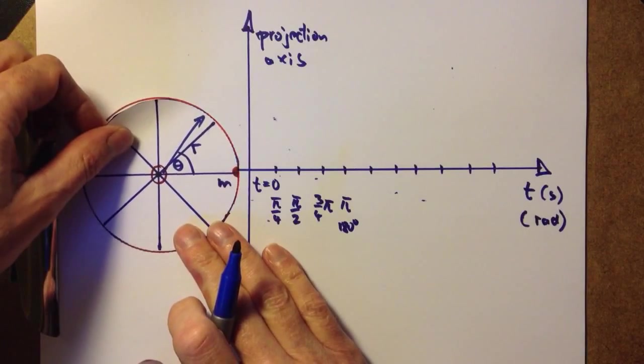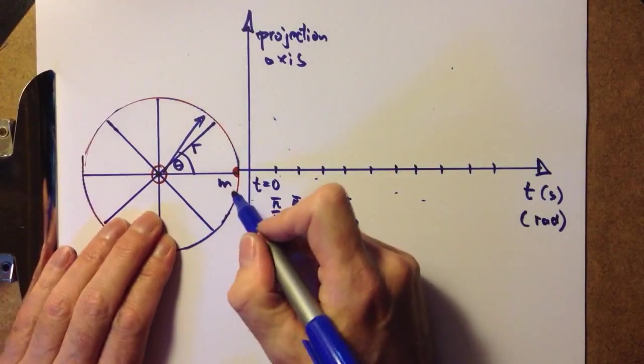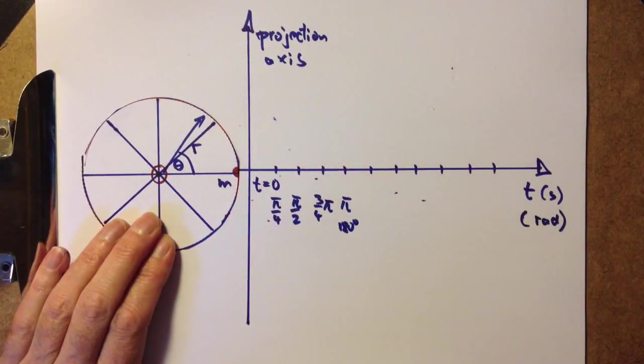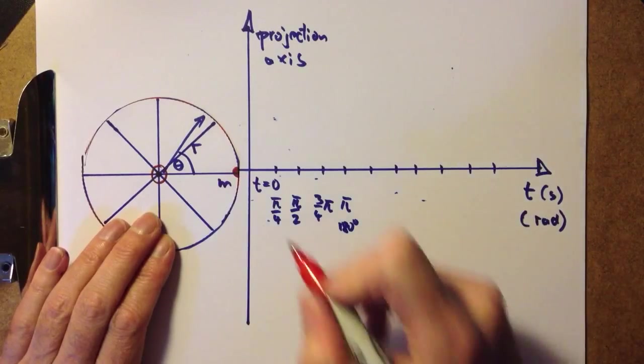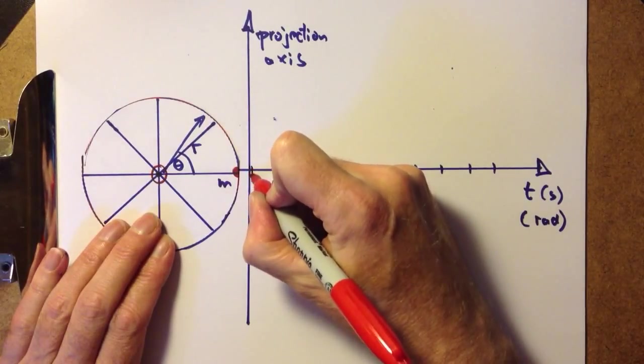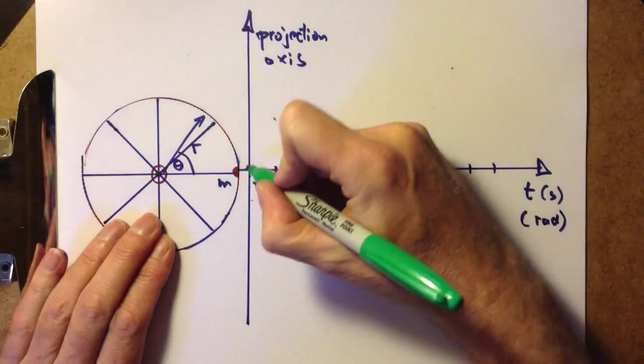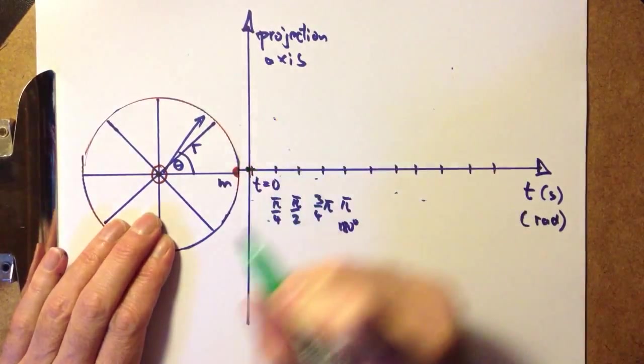At zero time, our mass M is at this point. And we want to indicate that on the timescale with a little cross here. On the projection scale, using green, we're also at this point.